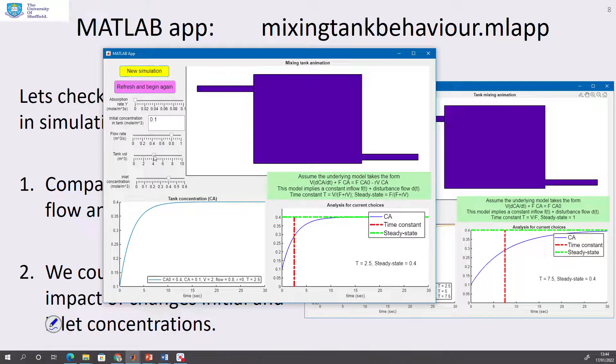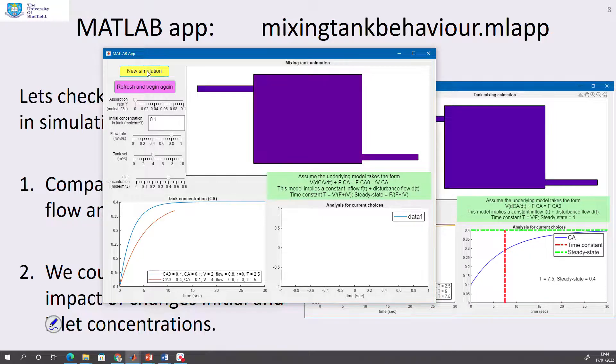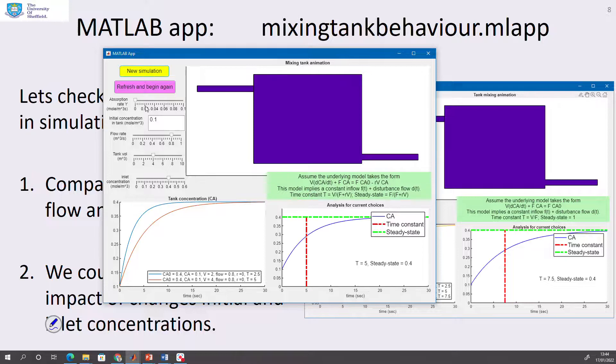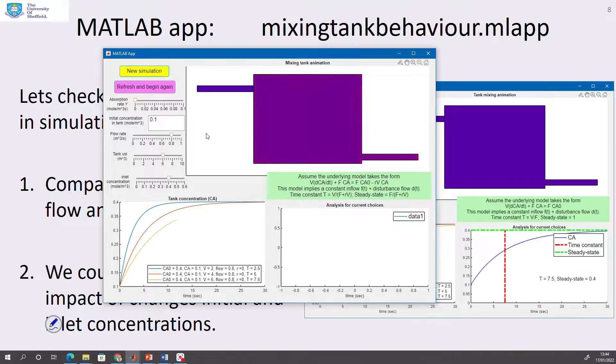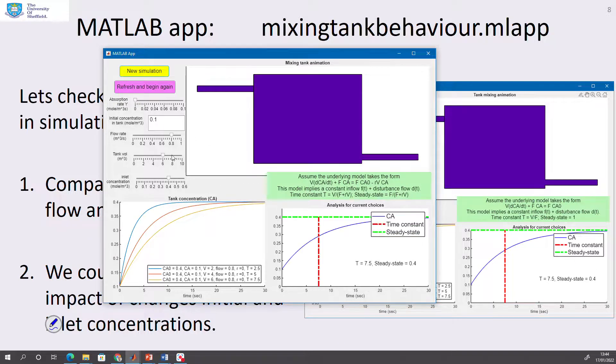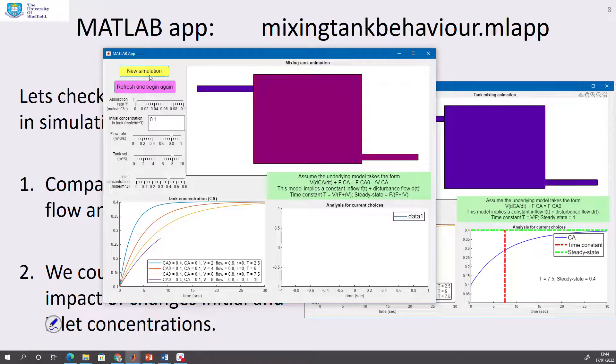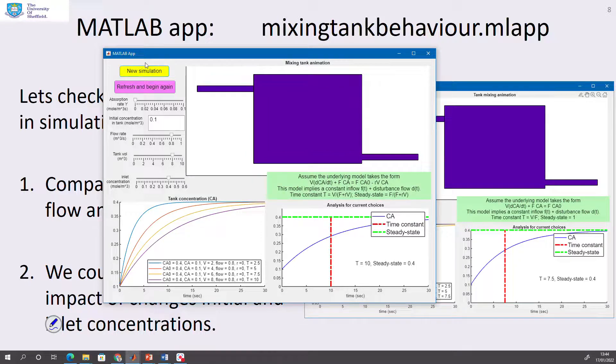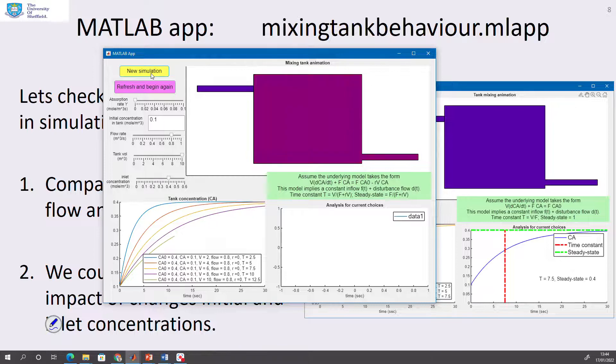So it settles, the eventual concentration settles at the inlet concentration as expected. Now let's make the tank a bit bigger. Let's go to 4. What you can see is as the tank gets bigger, the response has got slower. Let's make the tank go up to 6 and run the simulation. As the tank has got bigger, the time constant got slower. Go up to 8, and you can see here as the tank gets bigger, the change in concentration gets slower and slower and slower.